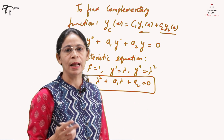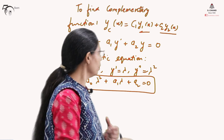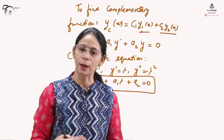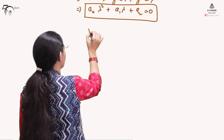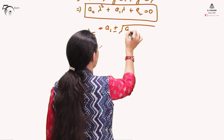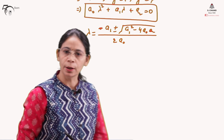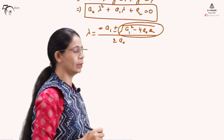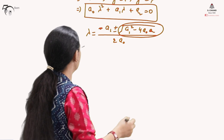Since this is a second-order polynomial, it has two roots, λ1 and λ2, which give us the two solutions y1 and y2. The roots are: λ = (−A₁ ± √(A₁² − 4A₀A₂)) / (2A₀). The discriminant A₁² − 4A₀A₂ plays a key role in deciding the type of roots. There are three cases: the roots may be real and distinct, complex conjugates, or equal.